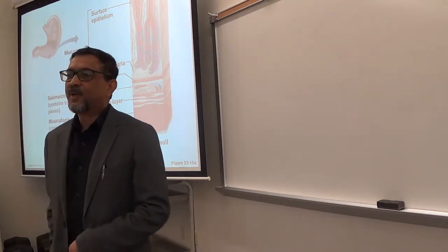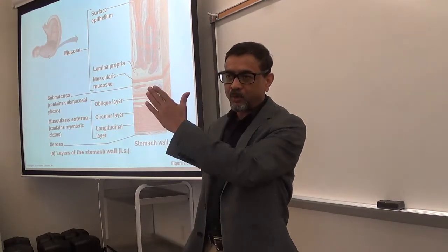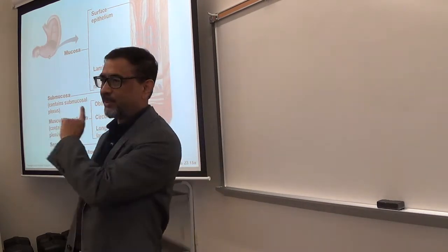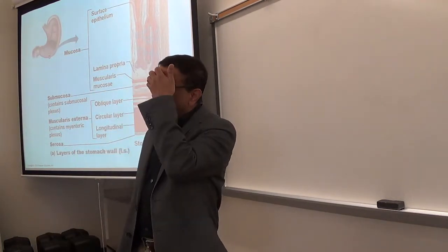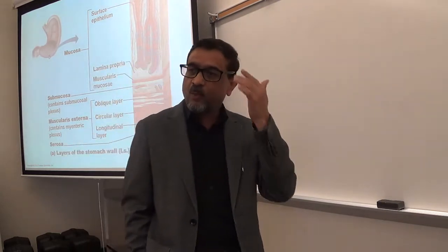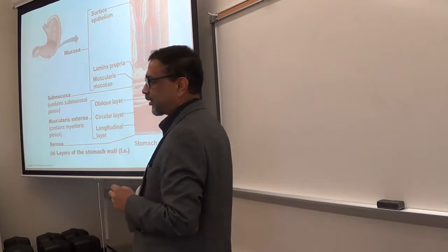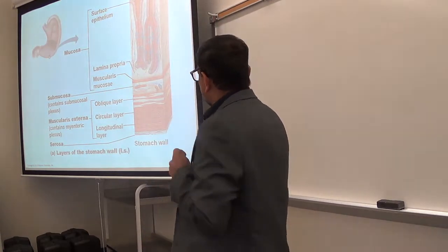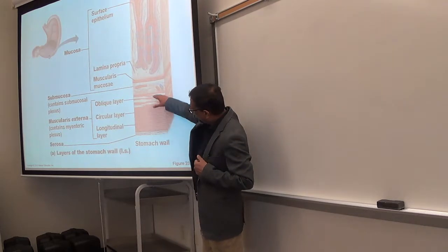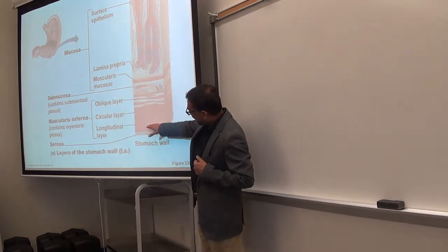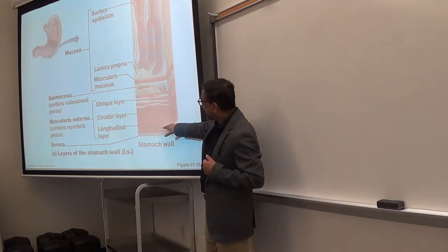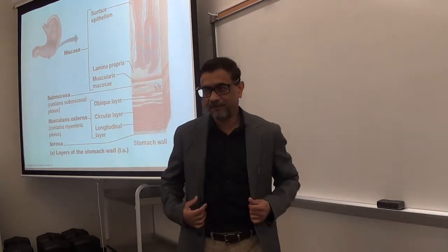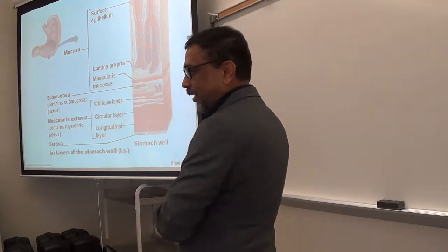There are four layers from inside to outside, everywhere in your GI tract: mucosa, submucosa, muscularis externa, and serosa — the outermost. Now, in the wall of the stomach, the muscularis externa has three layers — three muscle layers. In all other parts of your GI tract, only two. Those three layers from outside to inside are: outermost longitudinal smooth muscle fibers, middle one is circular, and innermost smooth muscle layer is oblique. Oblique is an extra layer in the stomach.